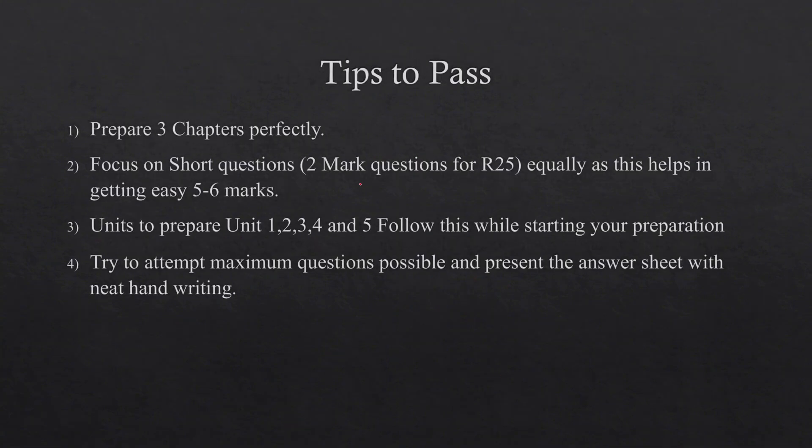Now come to tips to pass. Prepare three chapters perfectly. For R25 students, two-mark questions will be really important. You can get five to six marks and if you get six marks in Part A itself, in Part B you need to get only 15 marks which you will get by attempting three or four long answers. Units to prepare: 1, 2, 3, 4, and 5. Follow this while starting your preparation.